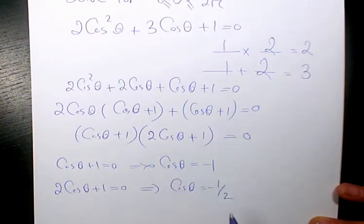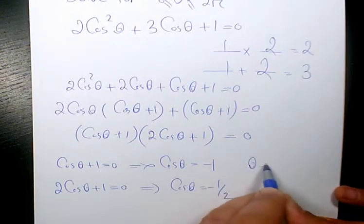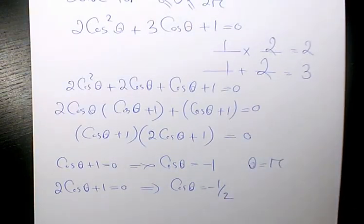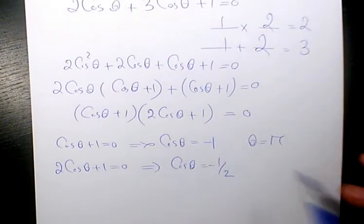Cosine theta equals to negative 1. It means that theta will be equals to pi, because cosine pi is negative 1.